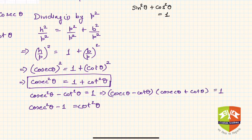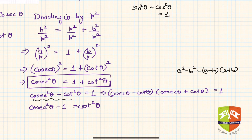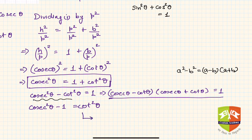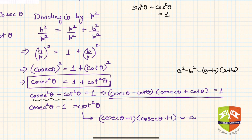This can be further factored as cosecant theta minus cot theta times cosecant theta plus cot theta equals 1, since it is in the form a squared minus b squared equals (a minus b)(a plus b). Similarly, cosecant theta minus 1 times cosecant theta plus 1 equals cot squared theta. These are all multiple ways of writing the same relation.